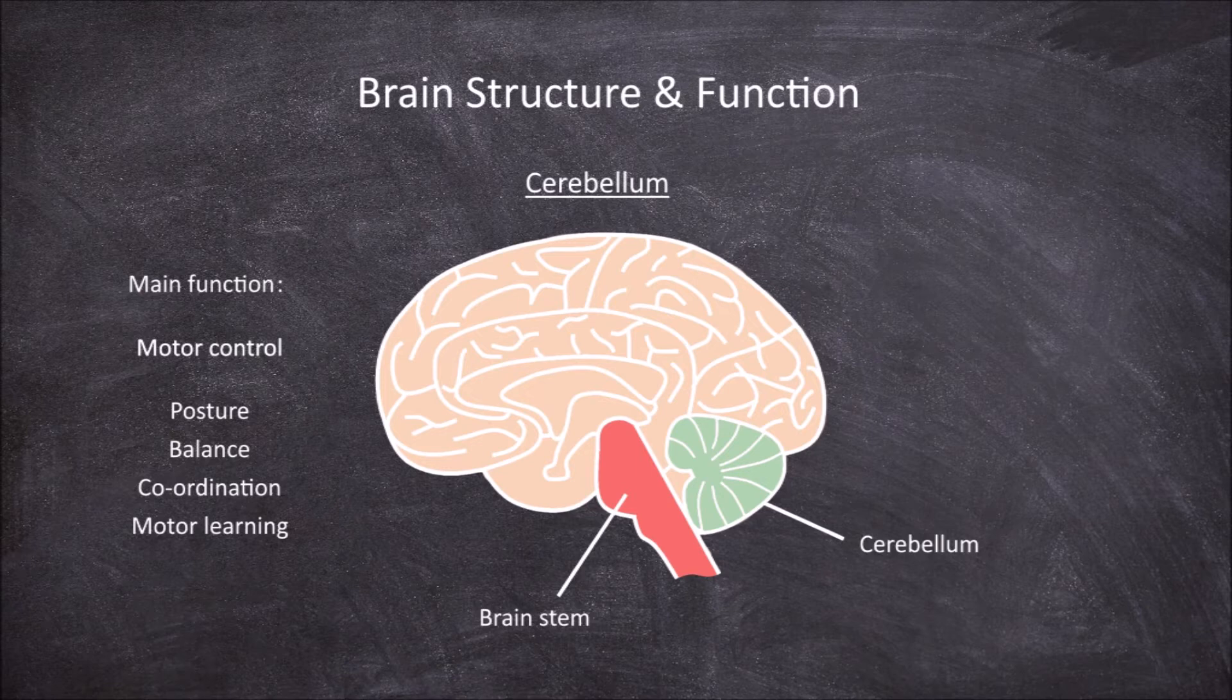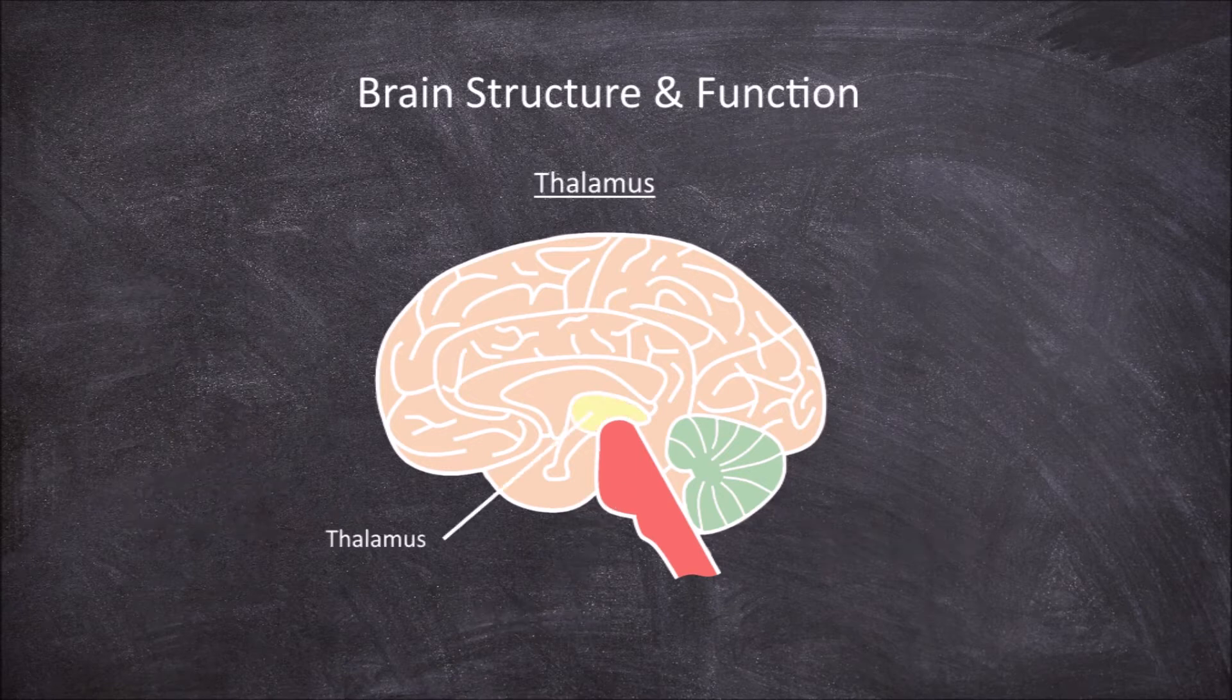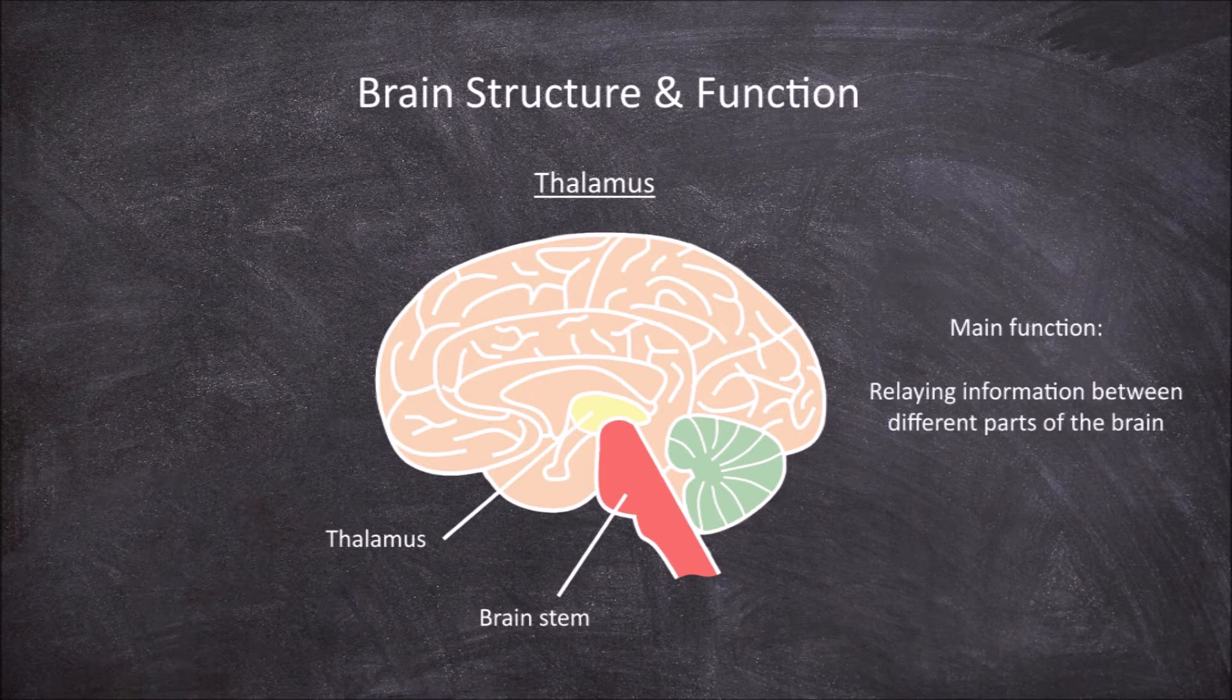The next part of the brain is the thalamus. The thalamus is found above the brain stem. The main function of the thalamus is in relaying information between different parts of the brain.